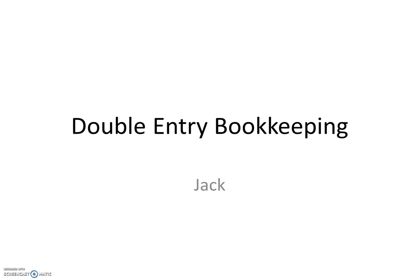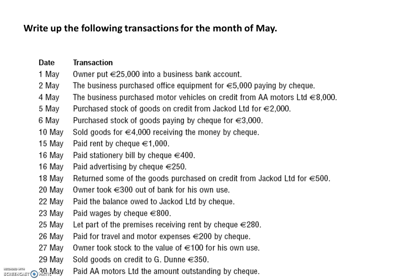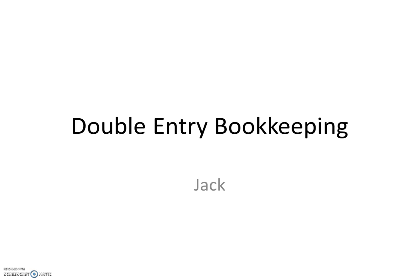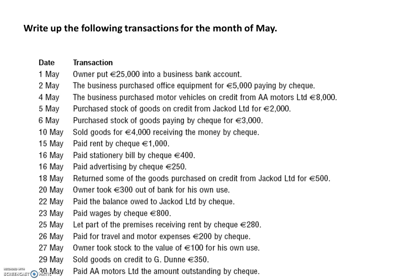In this video tutorial we are going to complete the double entry bookkeeping entries necessary to record the business transactions of Jack for the month of May. Here are the transactions for the month of May, listed from the 1st down to the 30th of May. You should have a copy of the question in front of you — you can download copies from the website. We are now going to start with the transactions one at a time, taking the 1st of May.